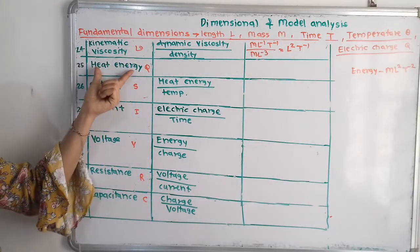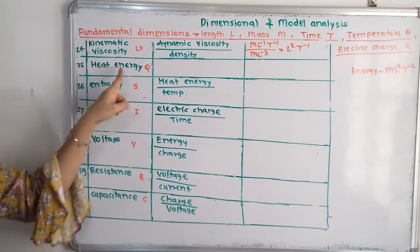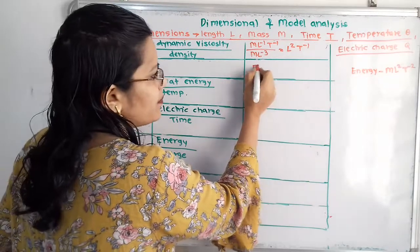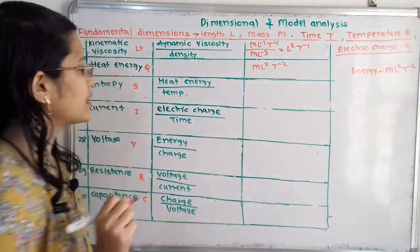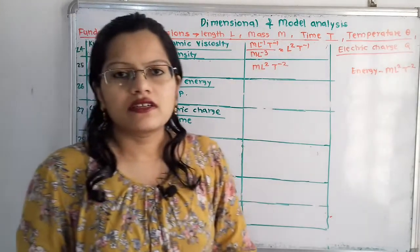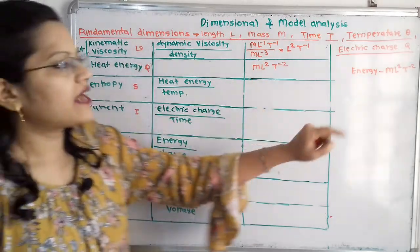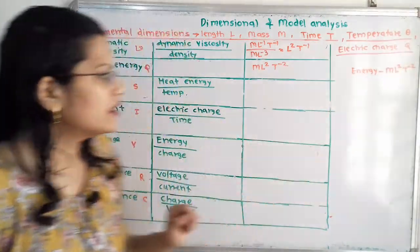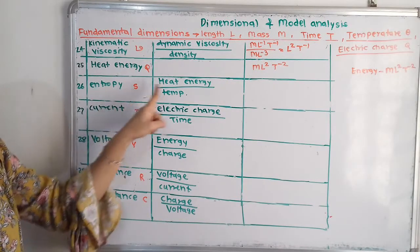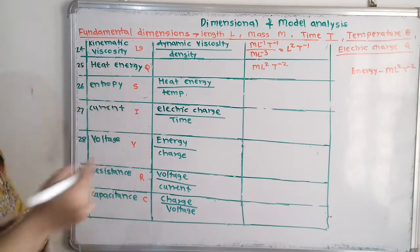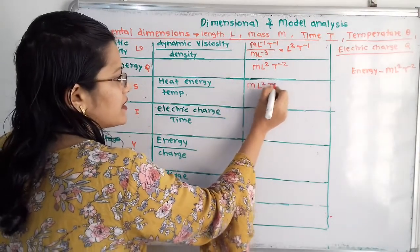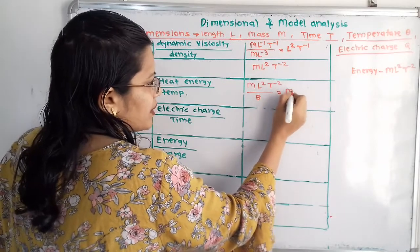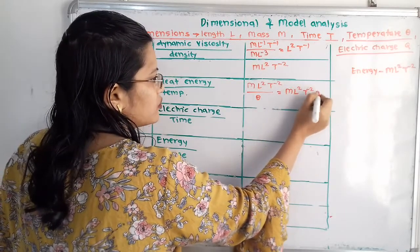Now we will move to heat energy, notation Q. For heat energy we take the dimension of energy, which we calculated earlier as ML squared T raised to minus 2. We also note two additional fundamental dimensions: temperature theta and electric charge Q. Then entropy, notation S, equals heat energy by temperature. So ML squared T raised to minus 2 divided by temperature theta gives ML squared T raised to minus 2 theta raised to minus 1.